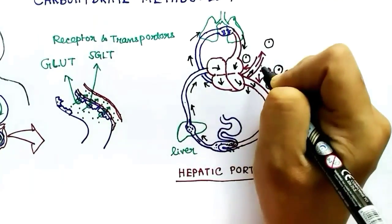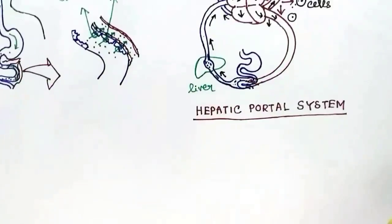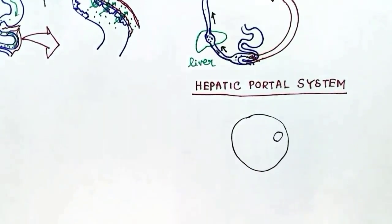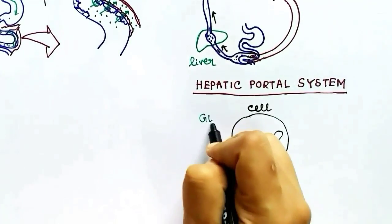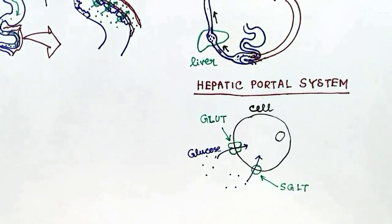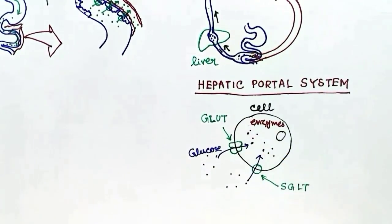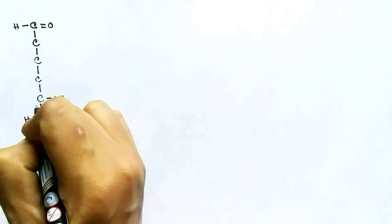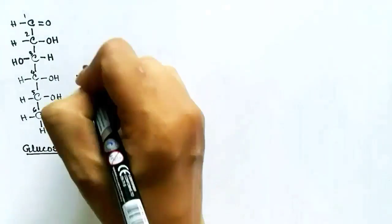The cells of different regions of the body also have transporters to receive glucose and other carbohydrates. Through these transporters, glucose enters the cell, where enzymes break it down to make energy or ATP. The first pathway for making ATP from glucose is glycolysis.